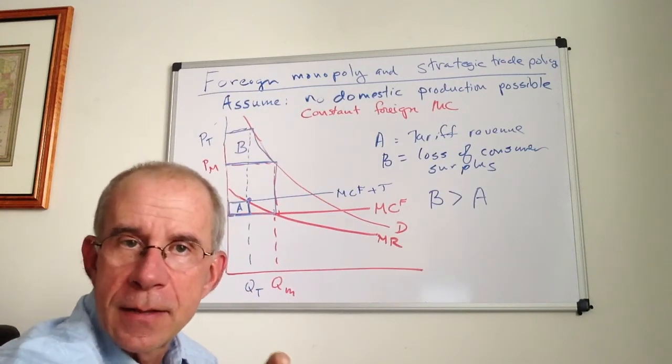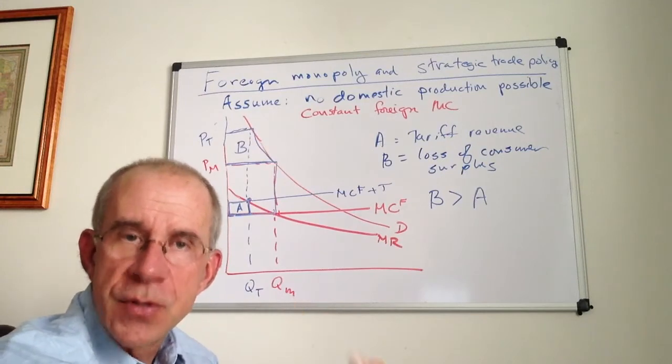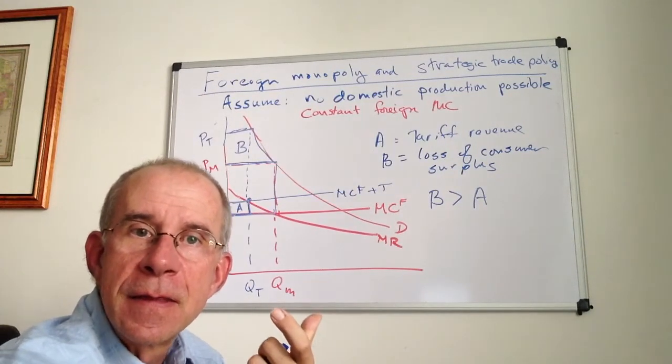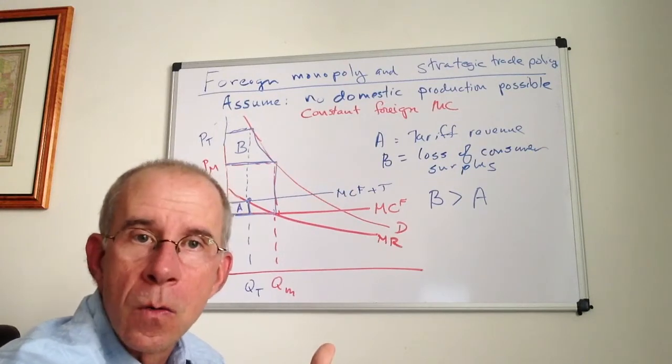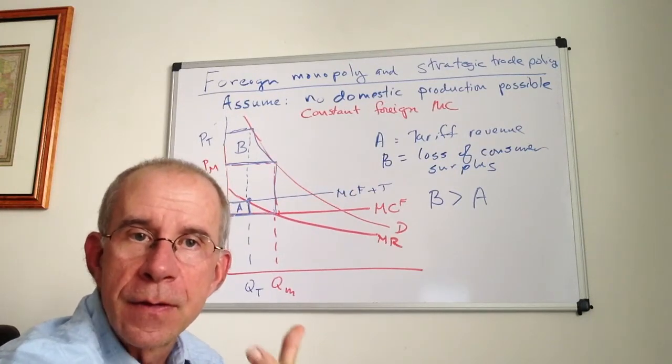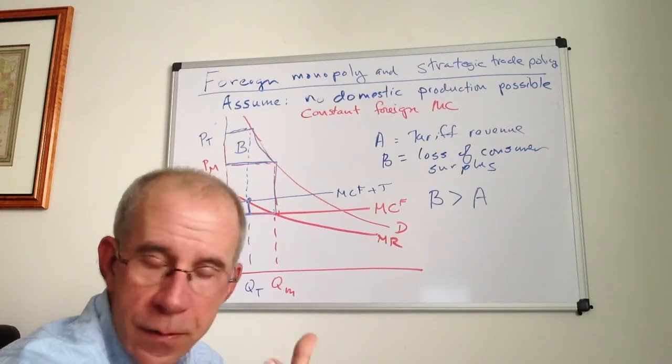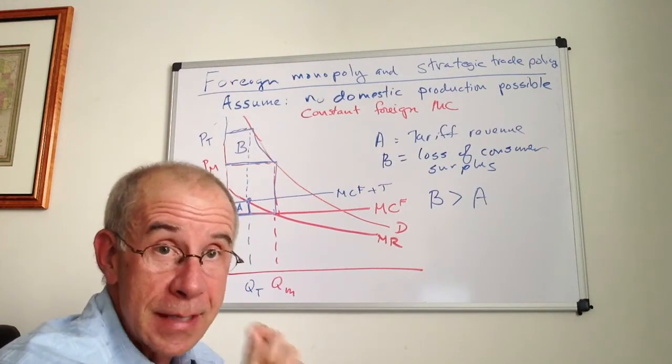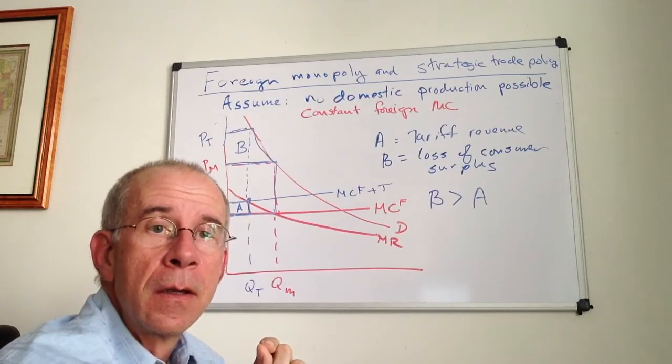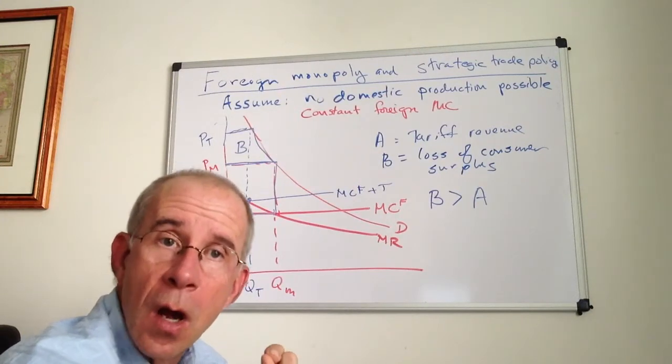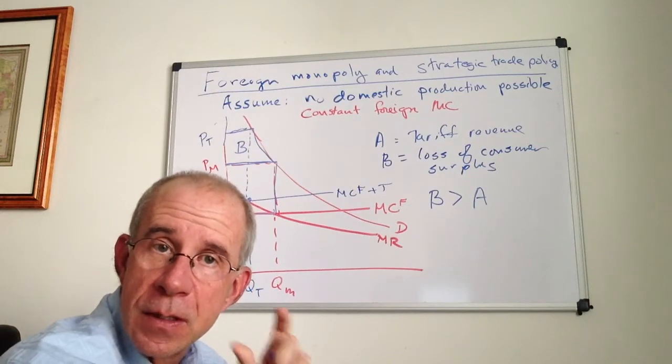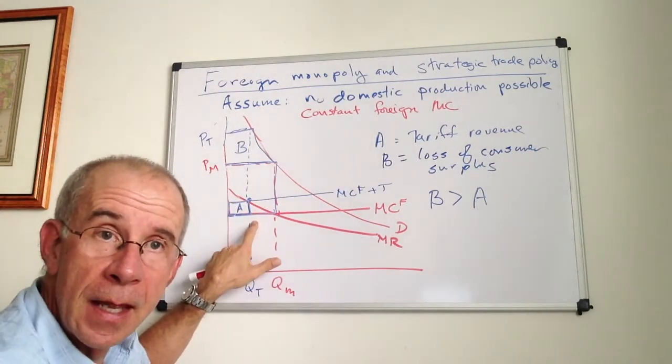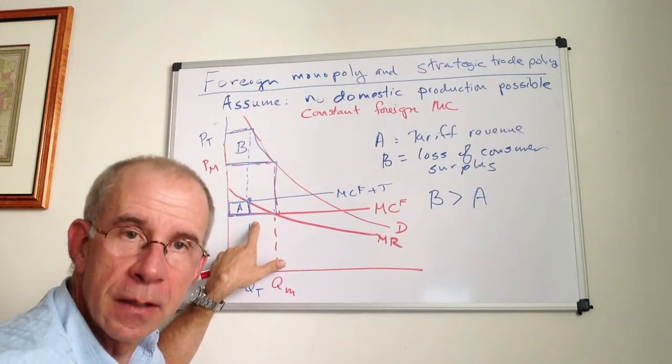This points out that to pursue this kind of policy against a foreign monopolist, the domestic government needs to know a lot about the domestic demand structure. You can do exactly the wrong thing if you don't know the relationship between the demand curve and marginal revenue. In this case, it makes no sense to impose the tariff.